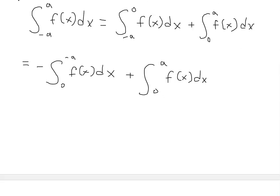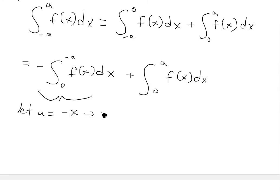The trick we can do is change the variable in the first part. Looking at that integral only, we let u equal negative x. This means x equals negative u. Taking the differential, du equals negative dx, so dx equals negative du. We're doing this so we can substitute everything — x and dx — in terms of u, and also change the limits of integration.